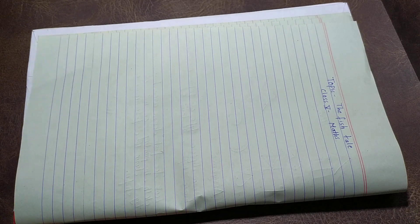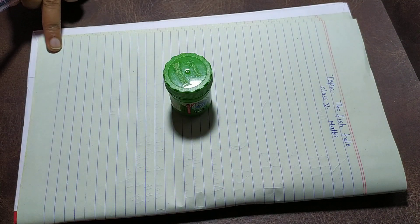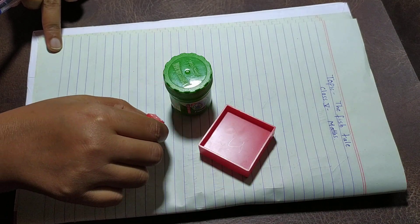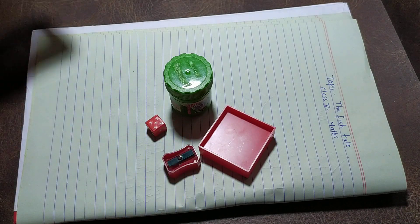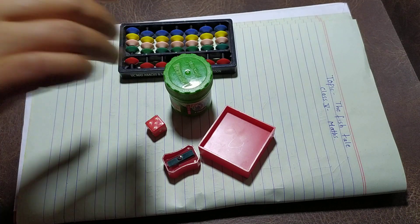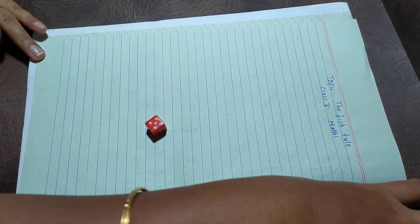There will be different objects around you. Pick some objects. I pick some objects like this bottle, toy, die, shopper, and a big glass. So let's trace these objects one by one.